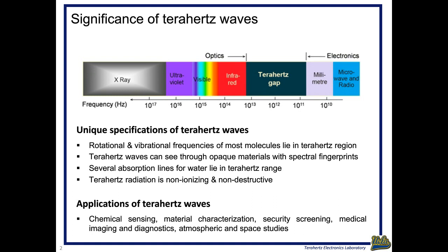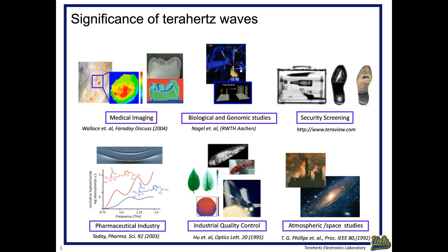That combination of specifications opens up a lot of potential applications for terahertz waves, and is the motivation for our research. The range of potential applications is very broad, ranging from medical imaging to industrial quality control, space explorations, atmospheric studies, and different kinds of sensing. In the medical domain, terahertz waves are very promising tools to identify between different kinds of tissues — cancerous and non-cancerous — and they can provide information about different kinds of biomarkers. One can get very high contrast in the terahertz image, sometimes much better than what optical waves offer.